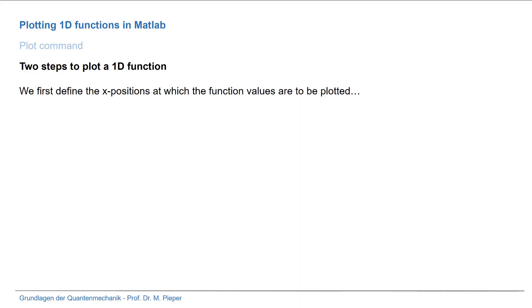Here are the two steps to plot a 1D function in MATLAB. First, we define the X positions at which the function values are to be plotted. We call the vector X. In this example, we start with 0, use a step size of 0.05, and end with a value of 10.